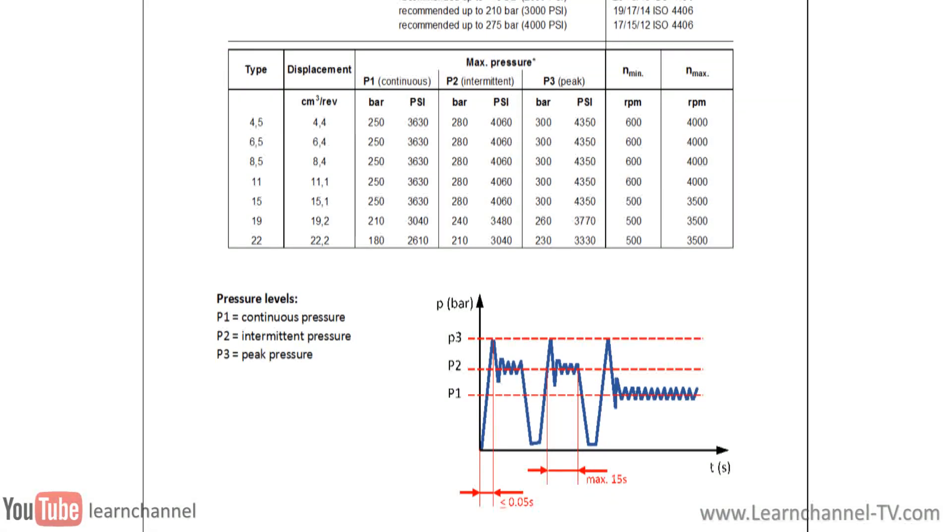Also interesting, this table distinguishes between three pressures. Peaks in pressure can occur due to external load, for example. A check valve at port P or a surge tank can protect the pump from the pressure peaks.